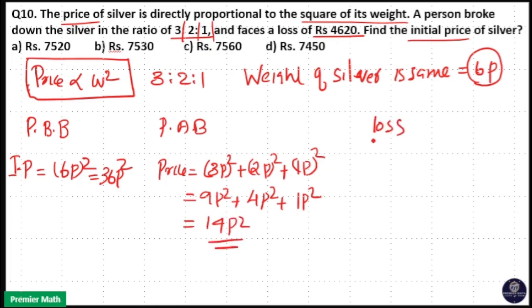So the loss is equal to initial price, that is 36 P square minus 14 P square, that is 22 P square.